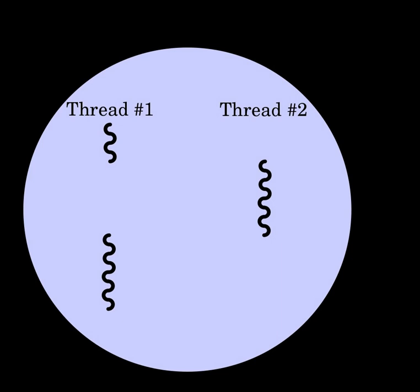The purpose of interleaved multi-threading is to remove all data dependency stalls from the execution pipeline. Since one thread is relatively independent from other threads, there is less chance of one instruction in one pipelining stage needing an output from an older instruction in the pipeline.